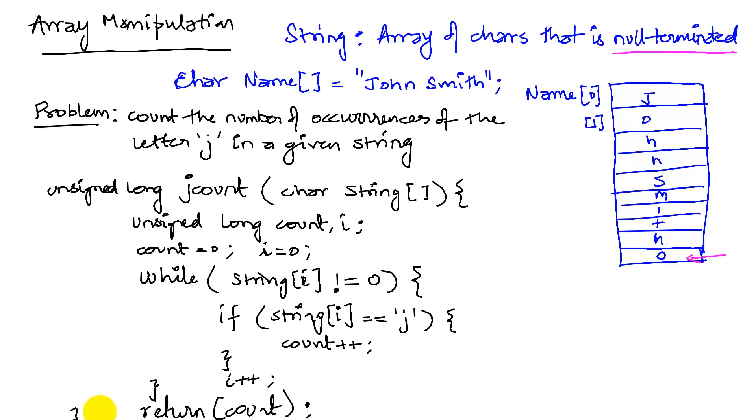To summarize, an array is always null terminated. And the check in my while loop is going to be to check for the null termination.